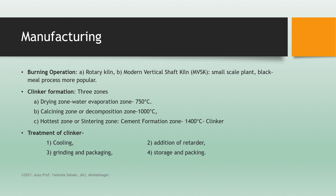The formed clinker is treated through different steps known as treatment of clinker. First, the clinker is cooled in a rotary cooler — this is the cooling process. Second, a retarder is added: gypsum is added as a retarder for adjustment of the setting time of the cement. Then, grinding and packaging: the clinker in round ball or stick form is ground in ball mills and other mills into fine powder, then sent for storage and packing. The bags must not absorb moisture, and storage must also be moisture-free.